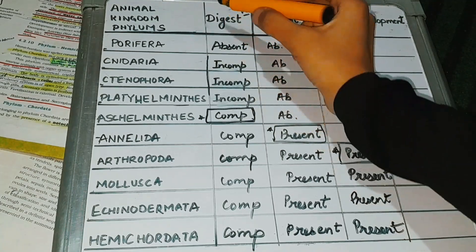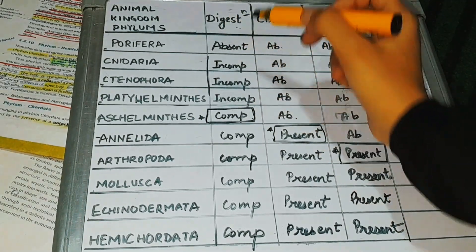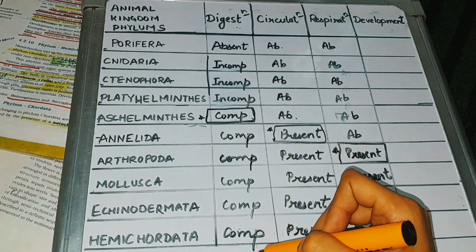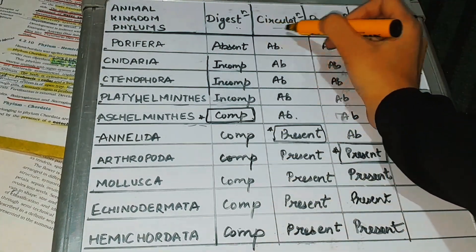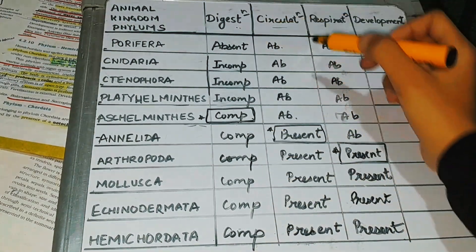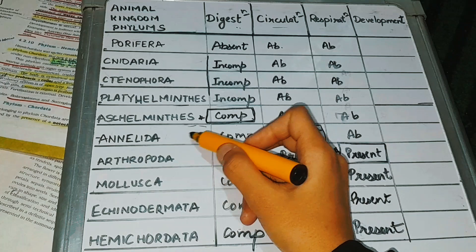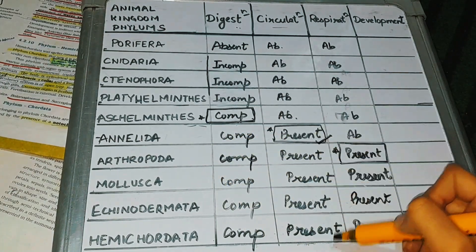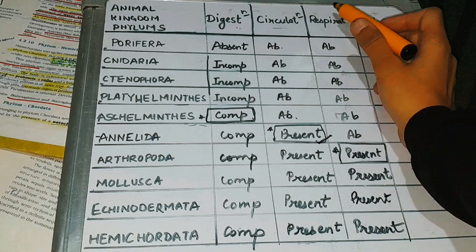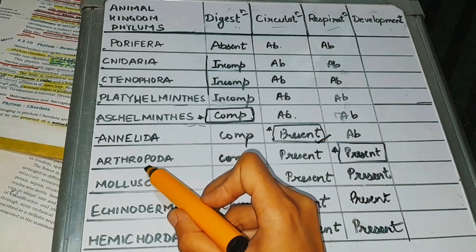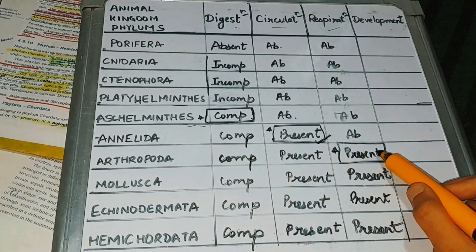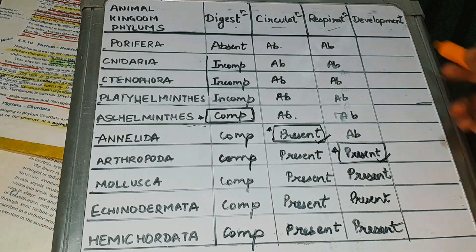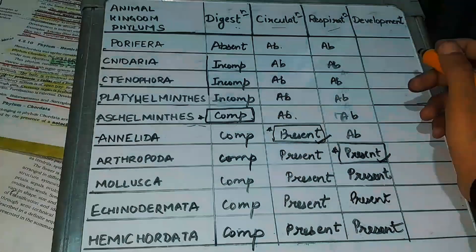Let's quickly summarize. Complete digestion was starting from Ascalminthus. Presence of circulation is starting from the Annelids phylum, and all other phylums after Annelids will have circulation present in them. Presence of respiration is starting from Arthropods, and all other phylums after Arthropods will have respiration present in them.